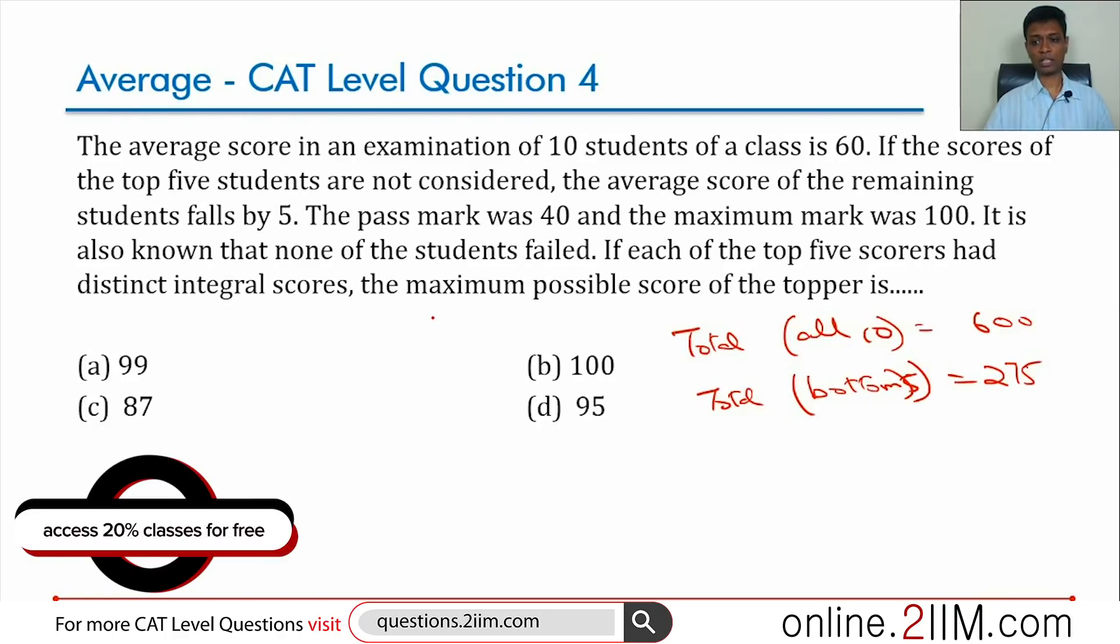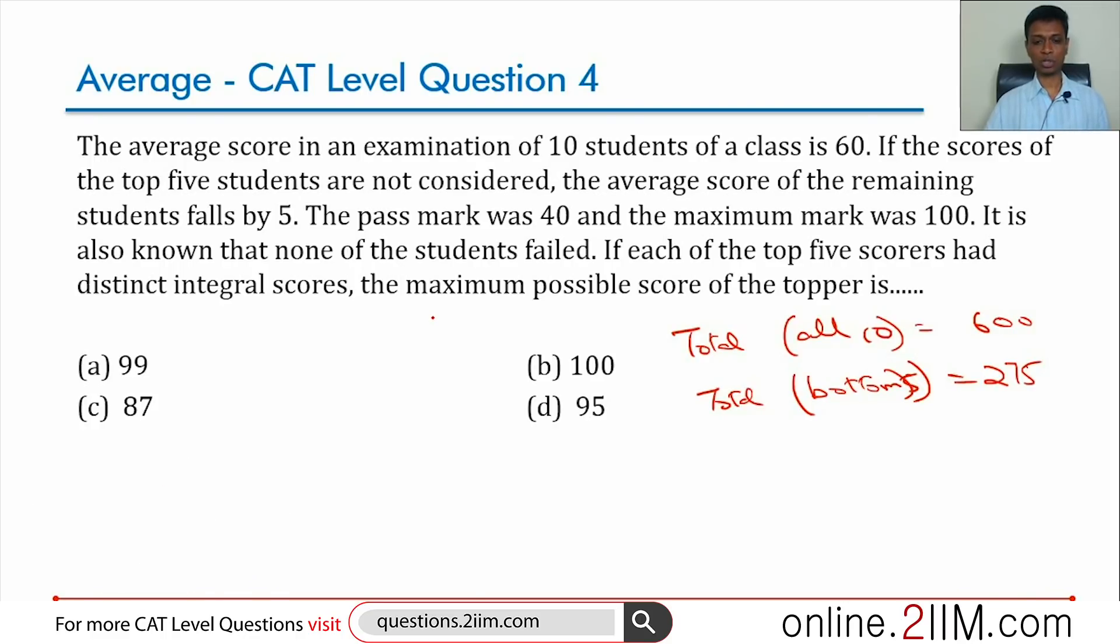The pass mark was 40 and the maximum mark was 100. It is known that none of the students failed, so everybody has scored at least 40 or more. If each of the top five scores had distinct integral scores, the maximum possible score of the topper is what we need to find. It's a good question.